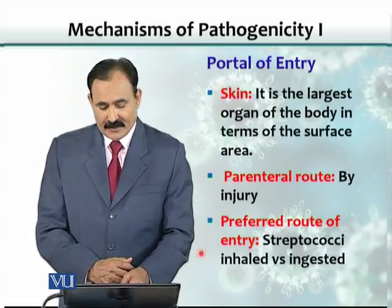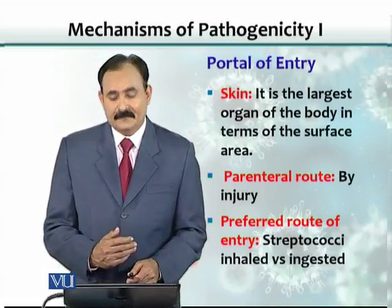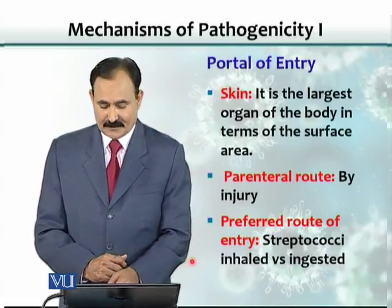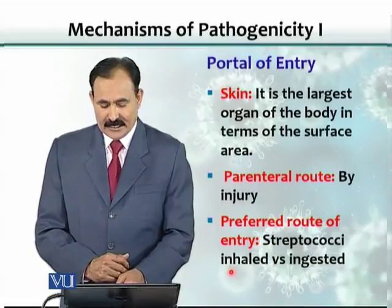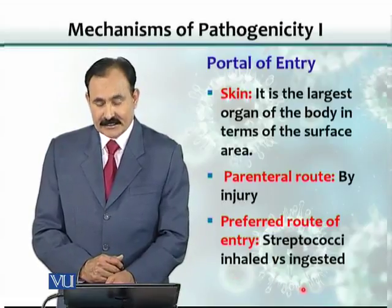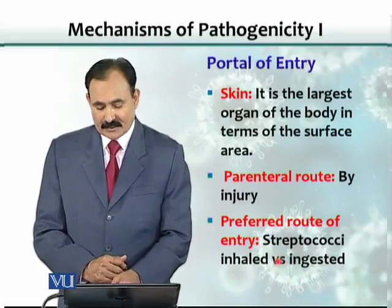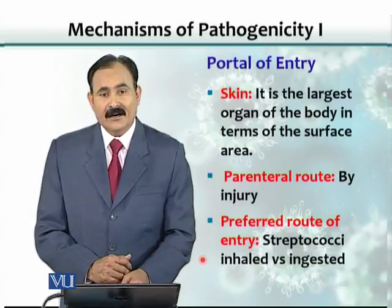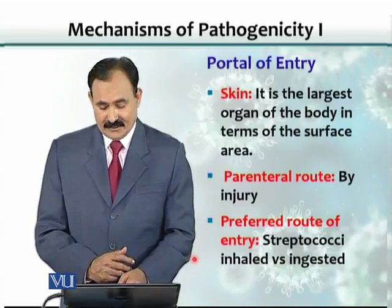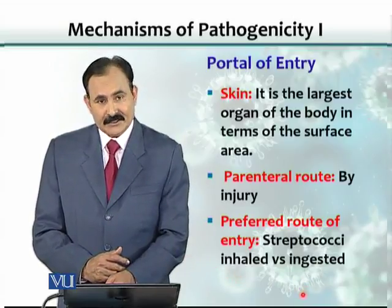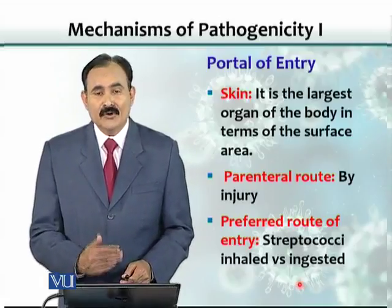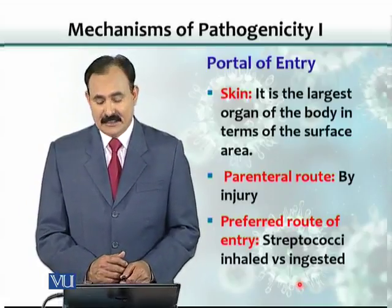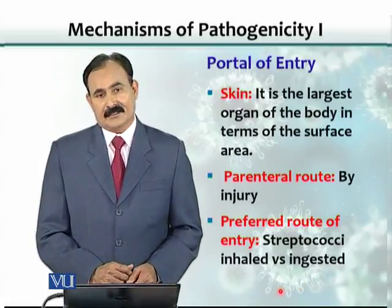Every organism has a preferential route of entry. For example, with streptococci: if they are inhaled, they can cause disease quickly. But if they are ingested, you need a greater number of organisms to cause disease, and they are also less likely to cause it.